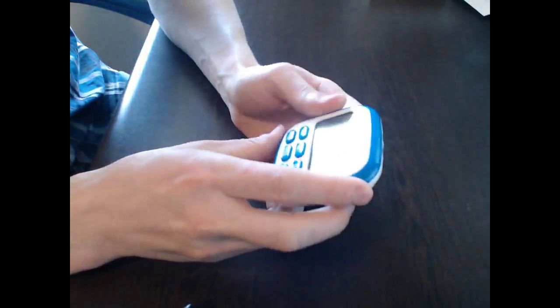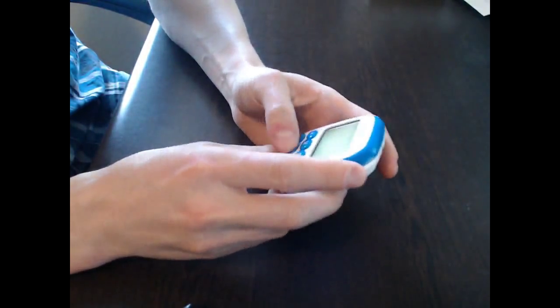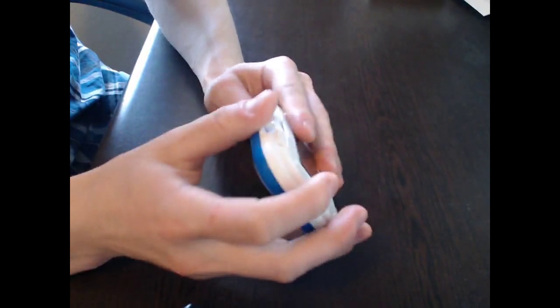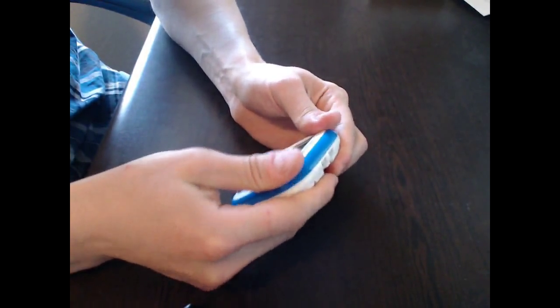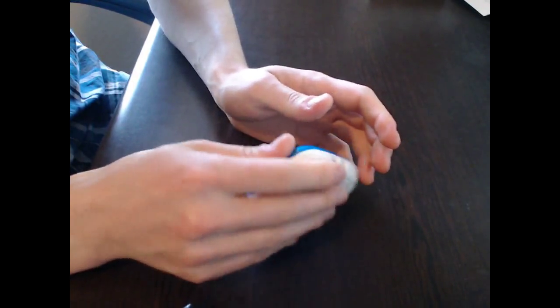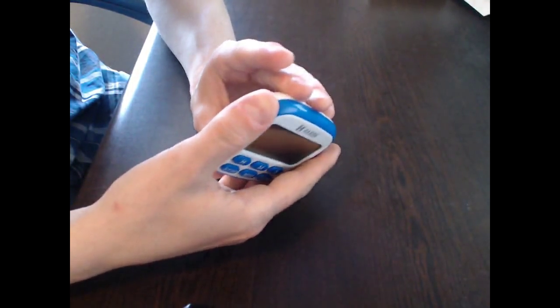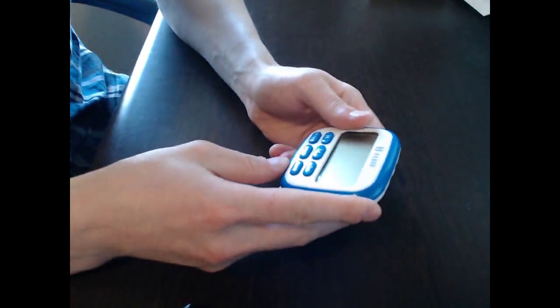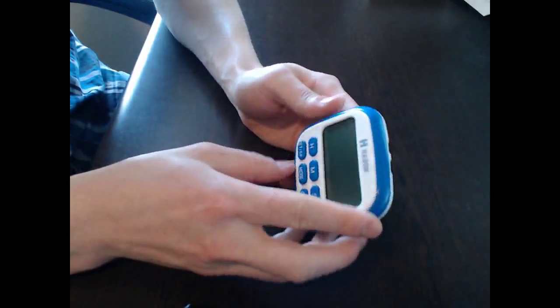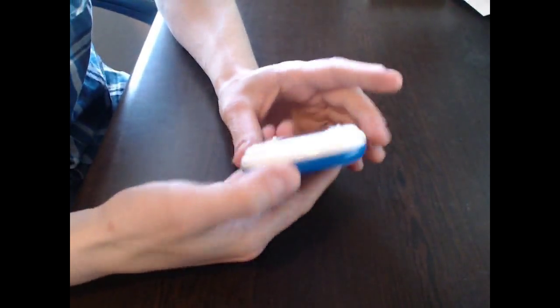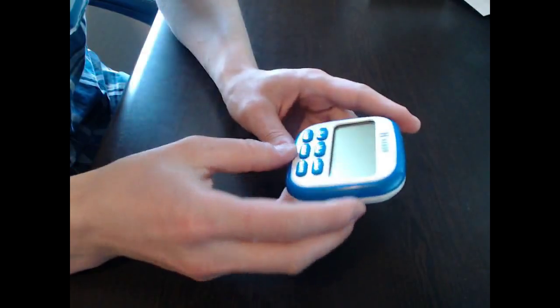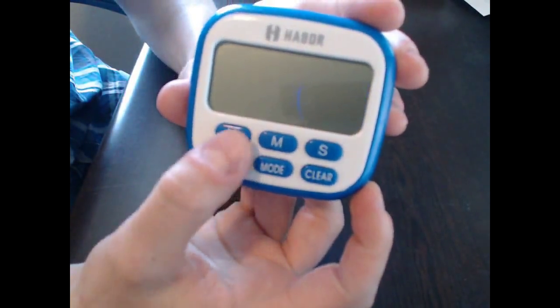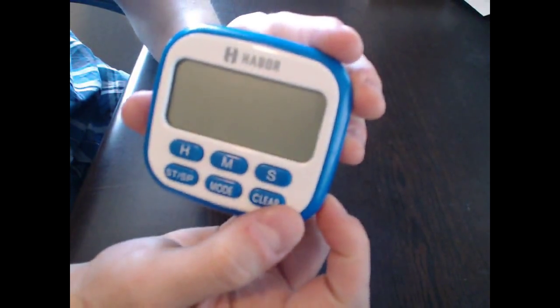Habor, looks like they used ABS plastic. Very rigid, very solid plastic. But it's easy to grip. I believe that's because of the type of plastic. Looking at the front, it looks like hour, minute, second. If you can see that. Start, stop, mode, and clear.